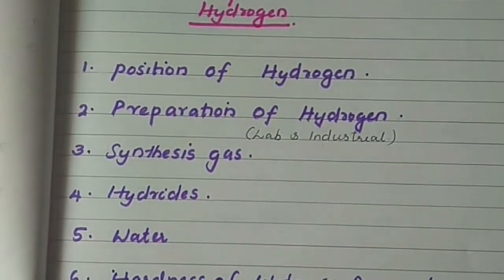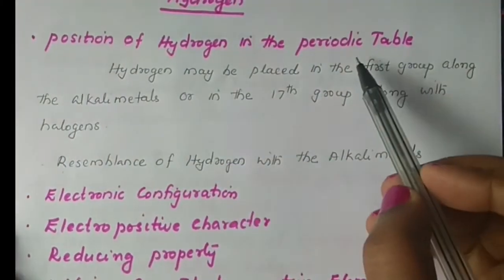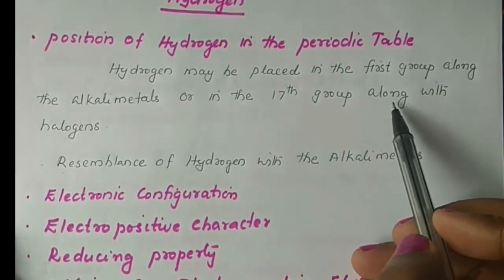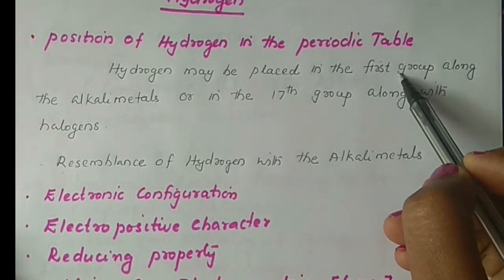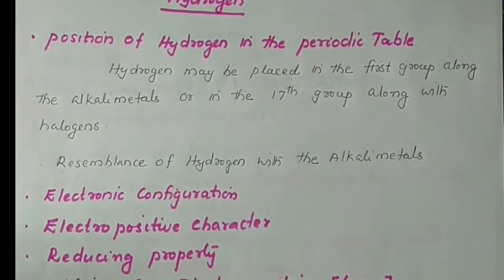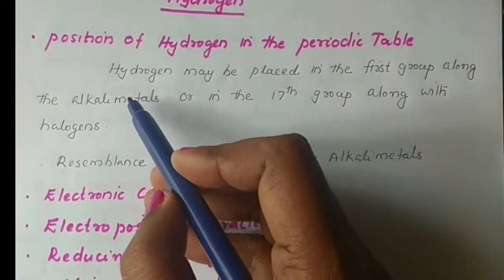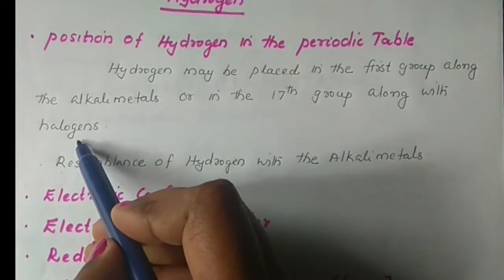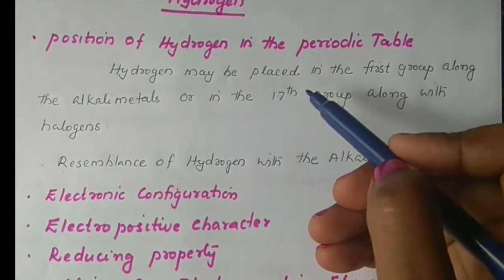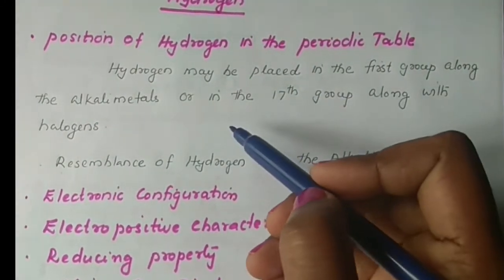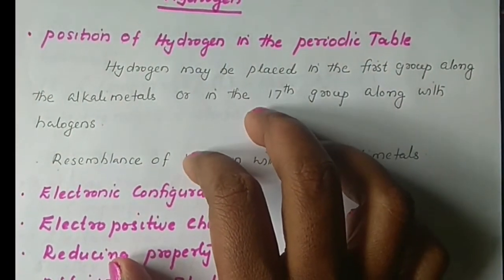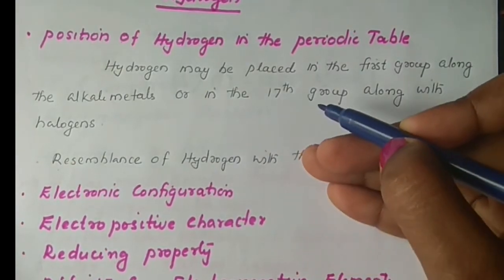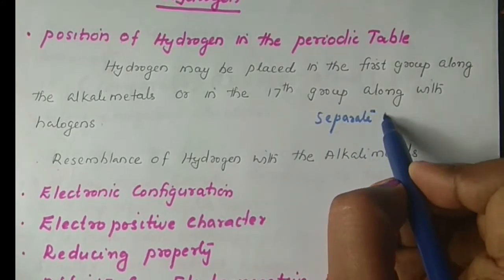The first point is the position of hydrogen in the periodic table. Hydrogen may be placed in the first group along with the alkali metals, or in the 17th group along with the halogens. Because hydrogen has similarities with both groups, it is placed in a separate place in the periodic table.